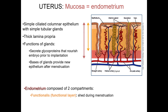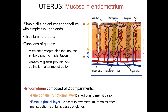Implantation of the placenta will take place in the functionalis layer. The basal layer, or basalis, shown in blue, is the layer closest to the myometrium. This thin layer contains the bases of the uterine glands, and these are not shed at menstruation, but will proliferate to reconstitute the functional layer.